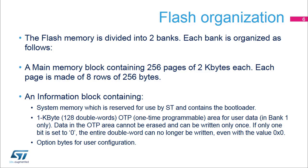When selected, the device boots in system memory to execute the bootloader. The second part is a 1 kilobyte one-time programmable area. This area is located in bank 1 only. The OTP area cannot be erased and can be written to only once. If 1 bit is at 0, the entire double word can no longer be written, even with the value 0. The last part contains the option bytes for configuring user options.